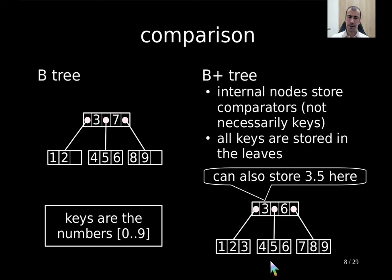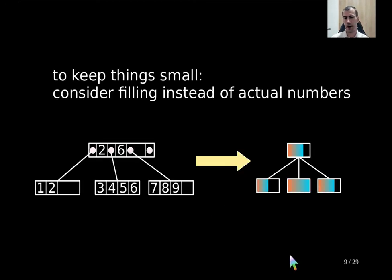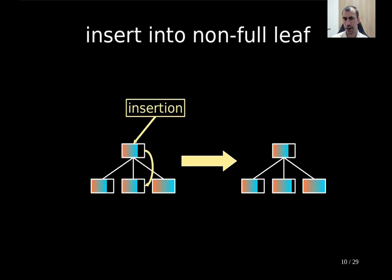To keep things simple, I just want to show the occupancy based on the filling of a node. Let me briefly review what insertion does for the B-tree. Given you want to insert a new key, you do the predecessor search, which guides you from the root down to a leaf — similarly to a binary search tree, but now you have multiple child choices.